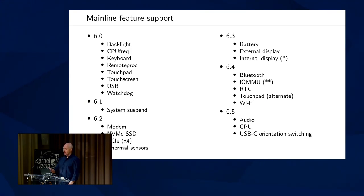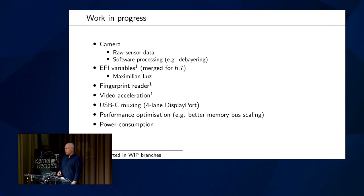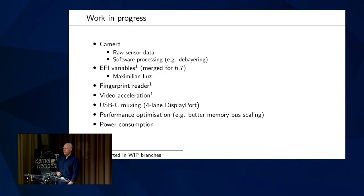The only thing missing from 6.5 is perhaps camera. You can use a USB webcam for now, but we're also working on that. Camera is underway — we probably won't be able to use the full hardware image processing pipeline, but raw sensor data can be read out and processed in user space, using libcamera with support for this. It seems to work well enough for video conferencing, though there are a lot of missing pieces in the user space support.